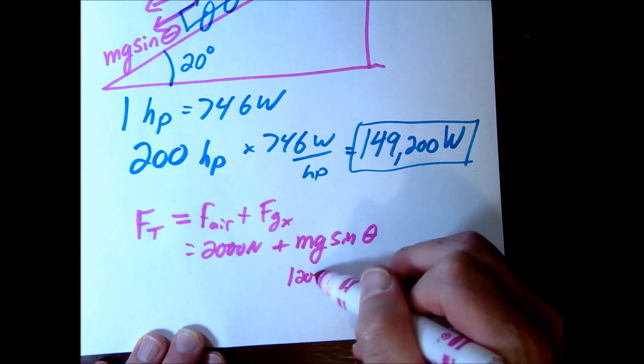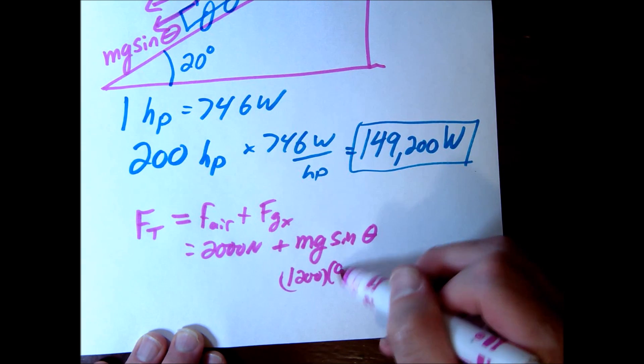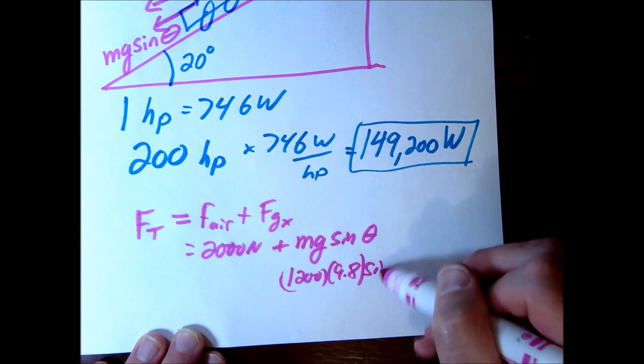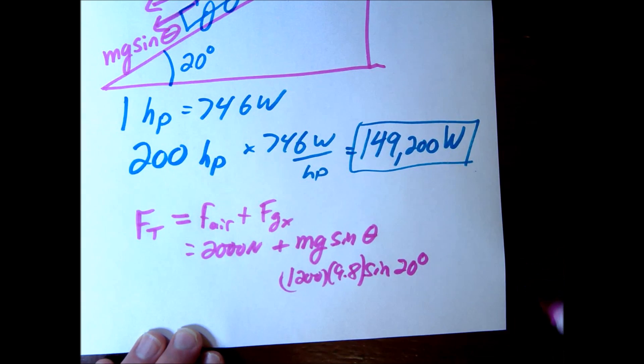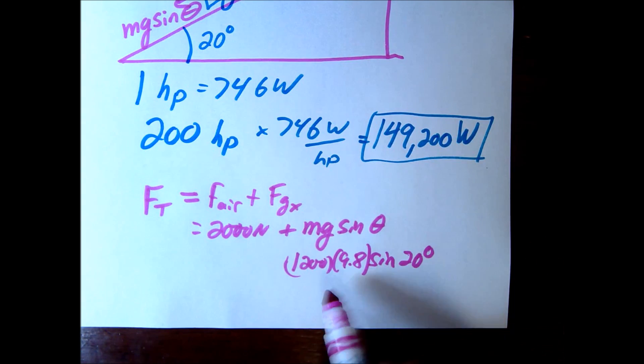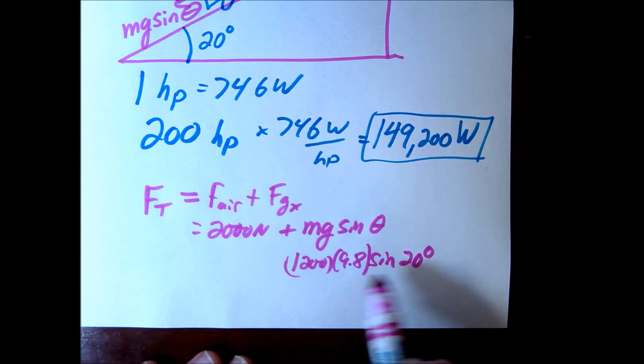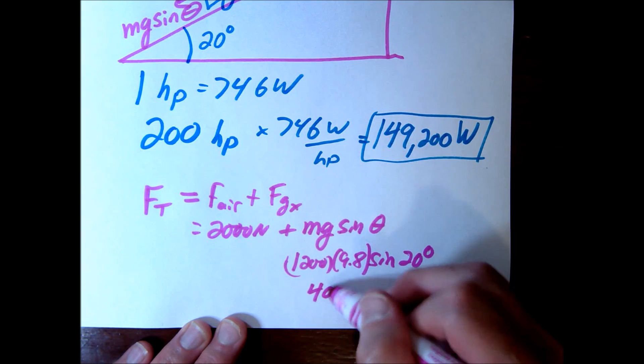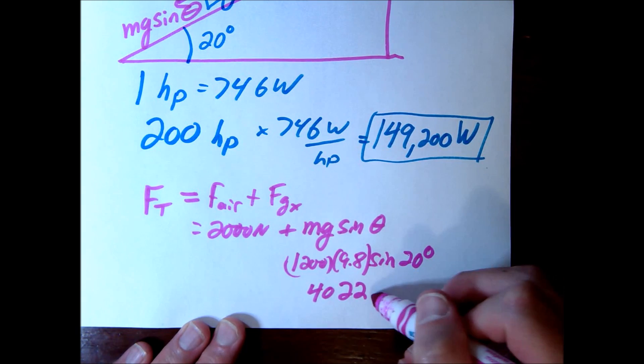Our m was 1,200 times 9.8 and the angle is 20 degrees. So that means, let's do this real quick. This is going to be 4022 newtons.